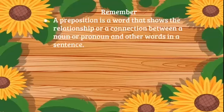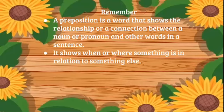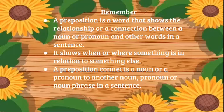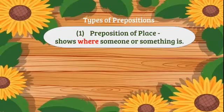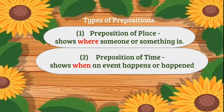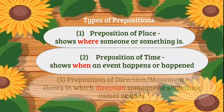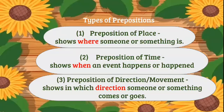So remember, a preposition is a word that shows a relationship or a connection between a noun or pronoun and other words in a sentence. It shows when or where something is in relation to something else. Our preposition connects a noun or pronoun to another noun, pronoun, or noun phrase in a sentence. Our types of prepositions: preposition of place — shows where someone or something is. Two, preposition of time — shows when an event happens or happened. And three, preposition of direction and movement — shows in which direction someone or something comes or goes.